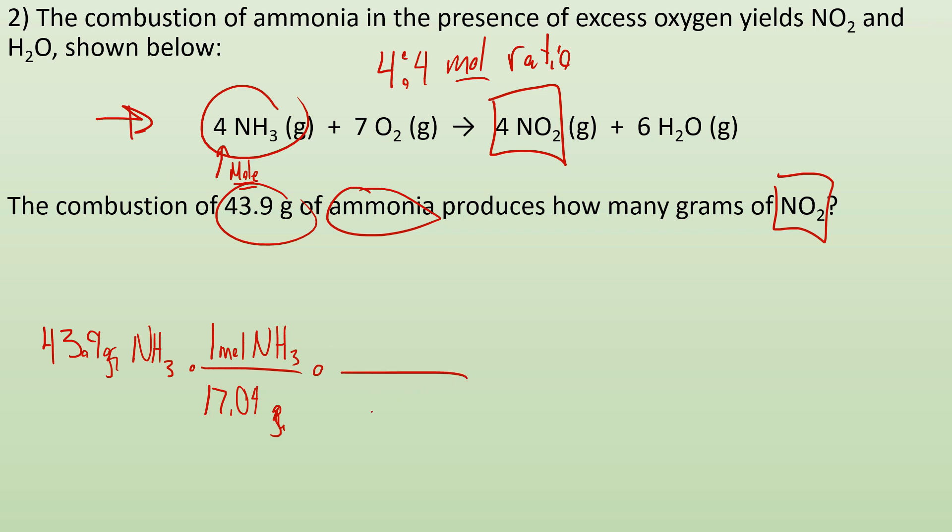So now I can look to my balanced chemical equation to get my mole to mole ratio. Now, if I got moles of NH3 up top, I got to put moles of NH3 on the bottom. So for every four moles of NH3, I can make four moles of NO2. I got that four from right here.